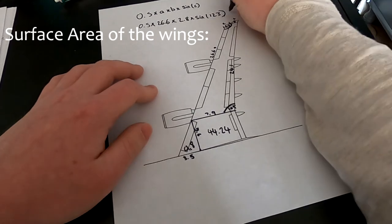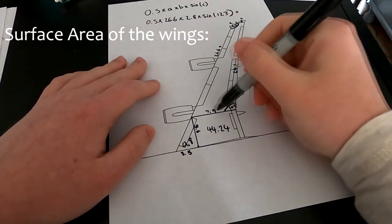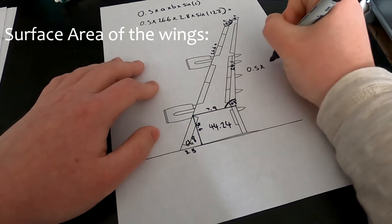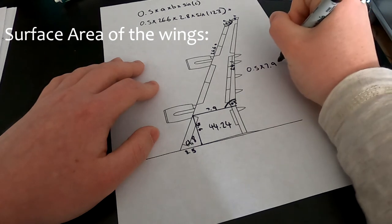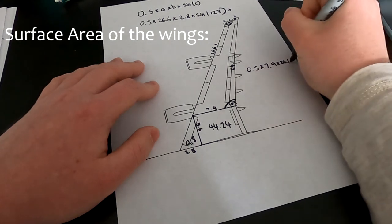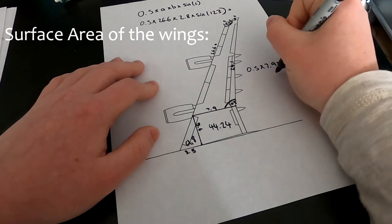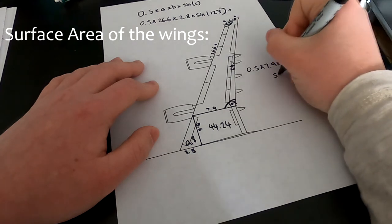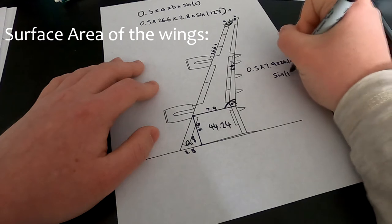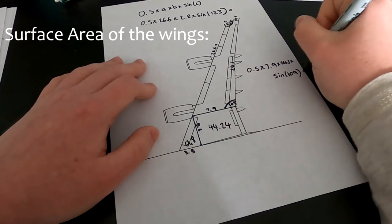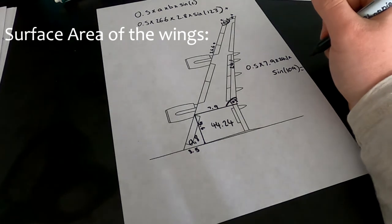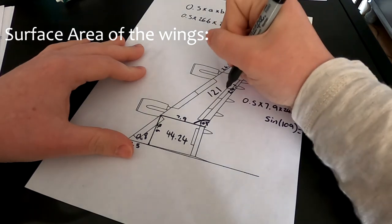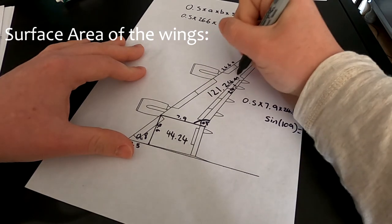And then we just have to add the same formula but with these plugged in instead. So, that is 0.5 times 7.9 times 24.1 times... I'm just going to have to move this down here because I'm terrible at using up my space properly. Times sine 109. And I have worked it out before. The answer is 121.24 meters squared.